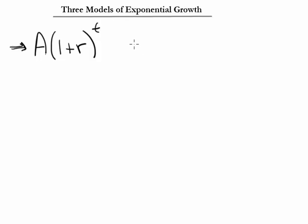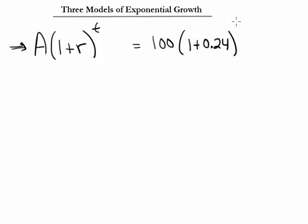Let's do a quick example. I have $100 and I'm going to get 24% interest — so 0.24 — over seven years. This right here represents our 24% interest.